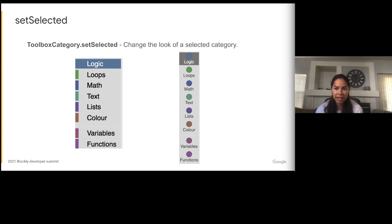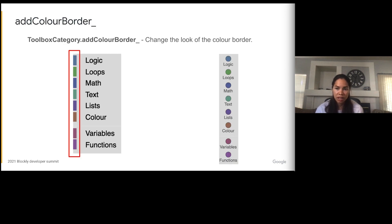The first method we're going to look at is setSelected on the toolbox category class. This method sets what the category looks like when it is selected. In the case of our default toolbox, we set the background color to the color of the category. In the case of the continuous toolbox, we set the background color to a darker shade of gray. The next method is addColorBorder on the toolbox category class. In the default toolbox, this creates the border on the left-hand side of the category. In the continuous toolbox, we didn't want that border, so we overrode addColorBorder and did nothing in this method.